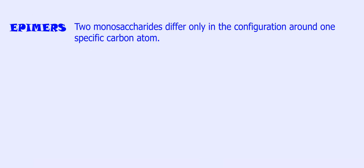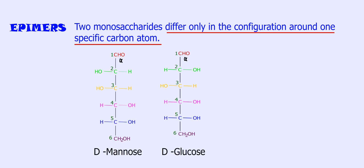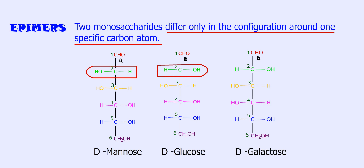2. Epimers. Two monosaccharides differ only in the configuration around one specific carbon atom. D-glucose and D-mannose are epimers with respect to carbon atom 2. And D-glucose and D-galactose are epimers with respect to carbon atom 4.